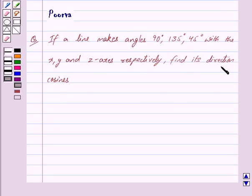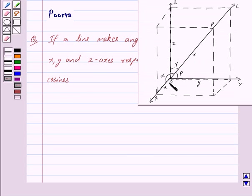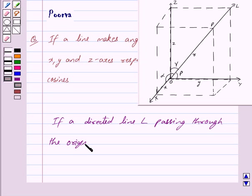Now if a directed line L passing through the origin makes angles alpha, beta and gamma with x, y and z axis respectively,